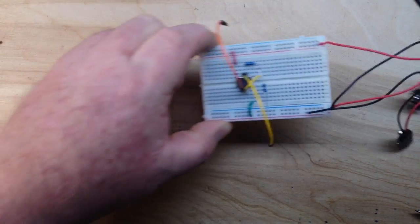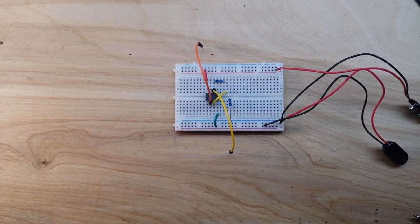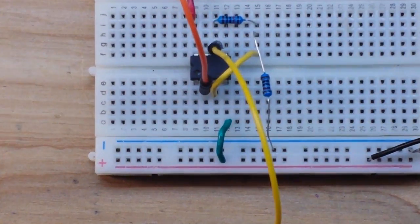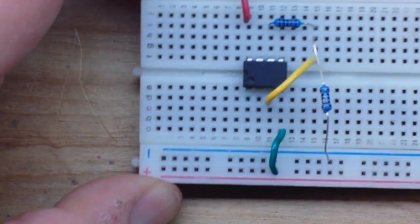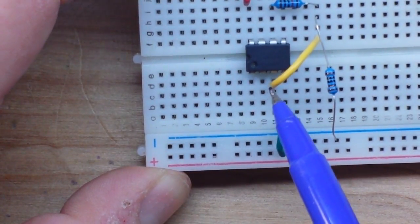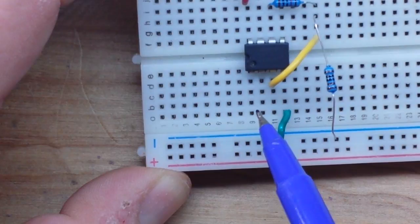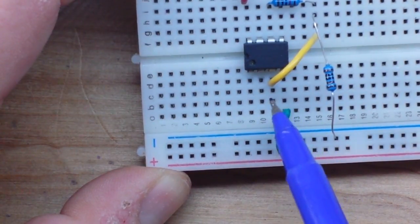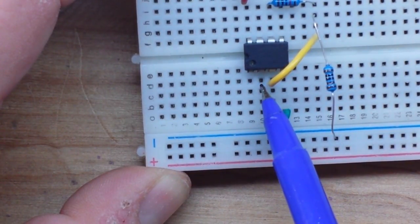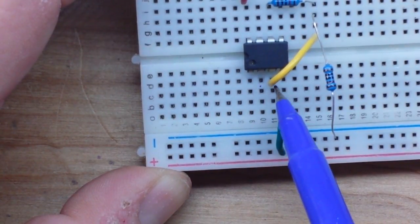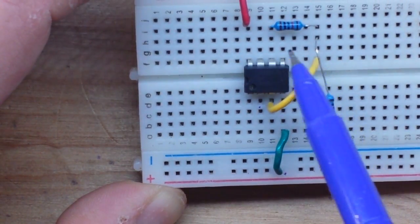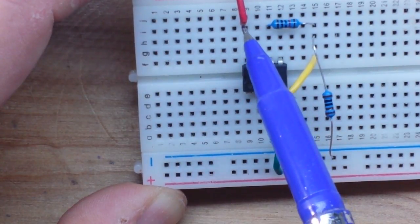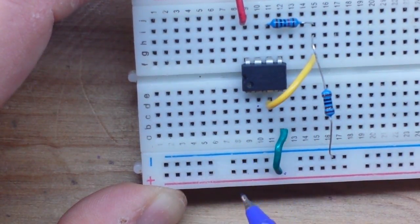All right, so let's take a look at the circuit. Let's zoom in here. All right, for right now let me pull these out so it's clearer for you guys. This is the LM741. Pin 2 is our inverting input, pin 3 is our non-inverting input, pin 4 is our negative supply, pin 6 is our output, and pin 8 is our positive supply.